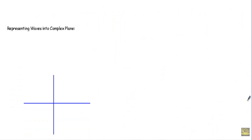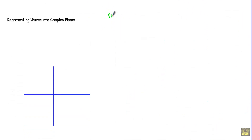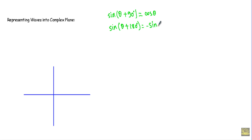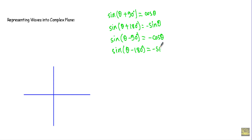Now let me represent the sinusoidal quantity in a complex plane. When we have sine theta, if we add 90 degrees we get cosine theta. If we add 180 degrees we get minus sine theta. With respect to sine theta, if we rotate by minus 90 degrees we get minus cosine theta, and rotating minus 180 degrees gives minus sine theta. This is how we construct the complex plane.